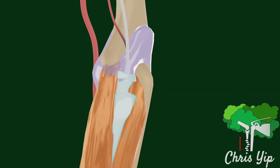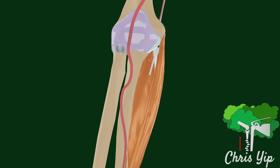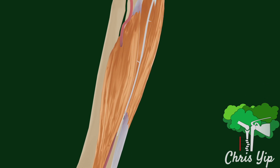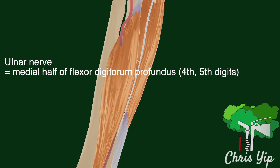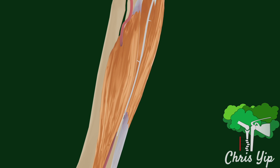After the ulnar nerve exits the cubital tunnel, it enters the anterior compartment of the forearm. In the forearm, the ulnar nerve is bounded laterally by the flexor carpi ulnaris and lies anterior to the flexor digitorum profundus. These two muscles are the only muscles in the forearm innervated by the ulnar nerve, which has branches supplying them as it travels down. Note that the ulnar nerve only supplies the medial half of the flexor digitorum profundus, as the lateral half is supplied by the median nerve. The ulnar nerve also gets closer to the ulnar artery as it moves distally.